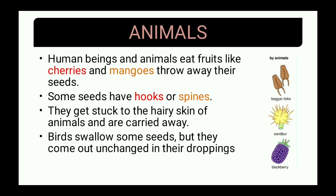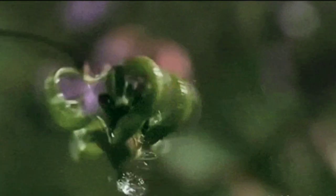Some seeds have hooks or spines which help them get stuck to the hairy skin of animals and are carried away. Examples are Bidens (beggar ticks), sandbur, and blackberry. These seeds have a specific structure that allows them to attach to the hairy skin of animals, helping their dispersal.